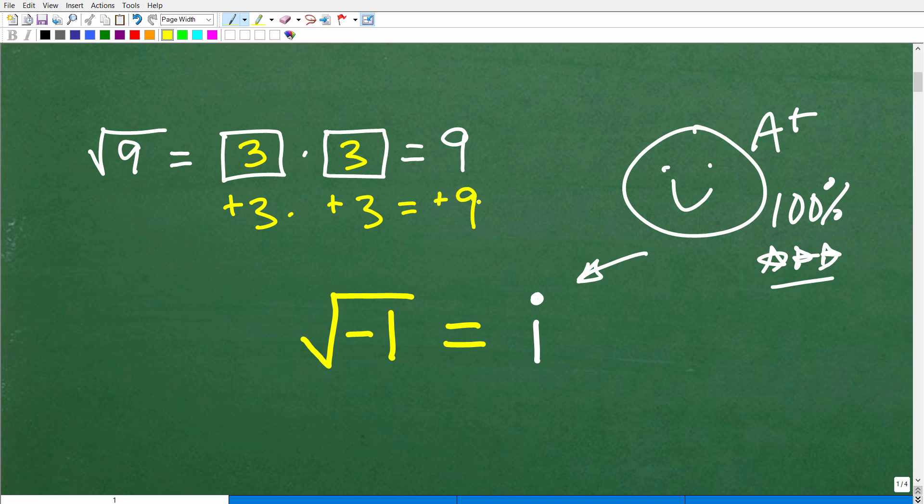Okay, but is this the only number that gets us back to a positive nine? No, if we multiply negative three times a negative three, we also get back to a positive nine. So when you think about this, if you said, well, the square root of negative one is negative one. Well, let's test that. Okay, so negative one times negative one is a positive one. We're looking for the square root of negative one. So we didn't get back to a negative one. So this is an issue, right?